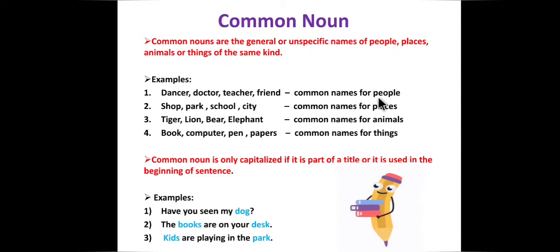Common names for people include dancer, doctor, teacher, friend. Let's consider 'friend.' When we say friend, we are not specifying the name of that friend. The friend can be your childhood friend, your college friend, your best friend, your new friend, or any other friend. We are not pointing out a specific person — we are saying 'friend' in general. The friend can be your neighbor; it can be any friend.